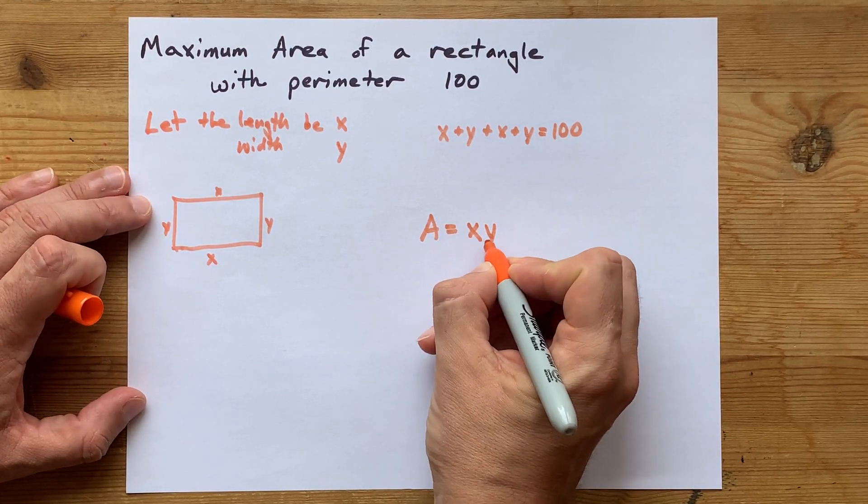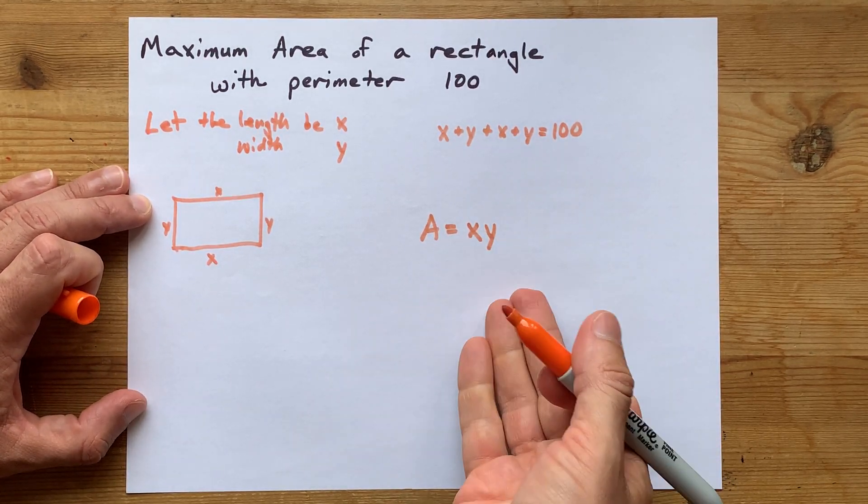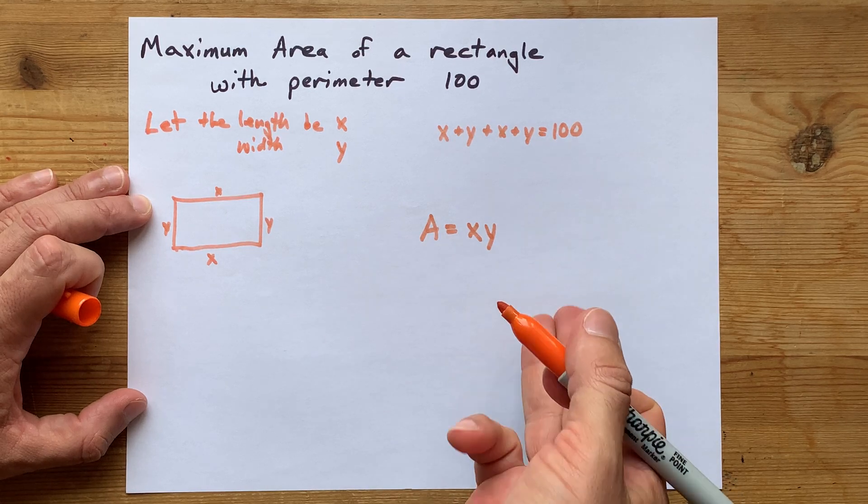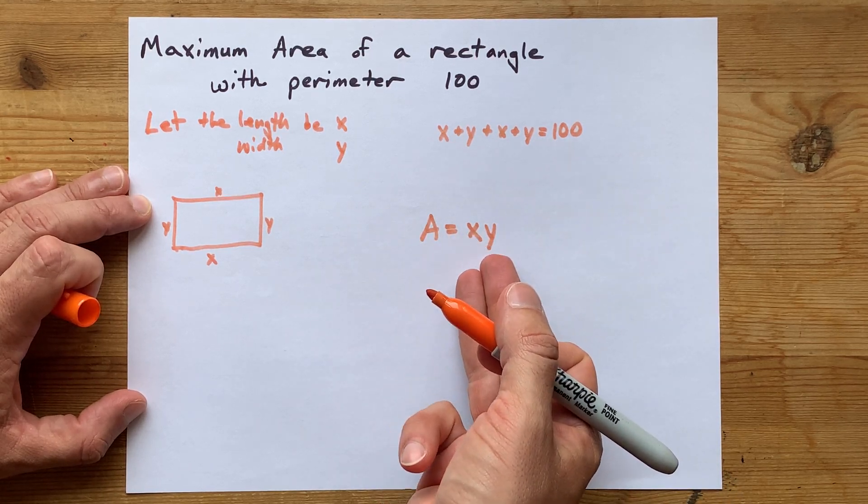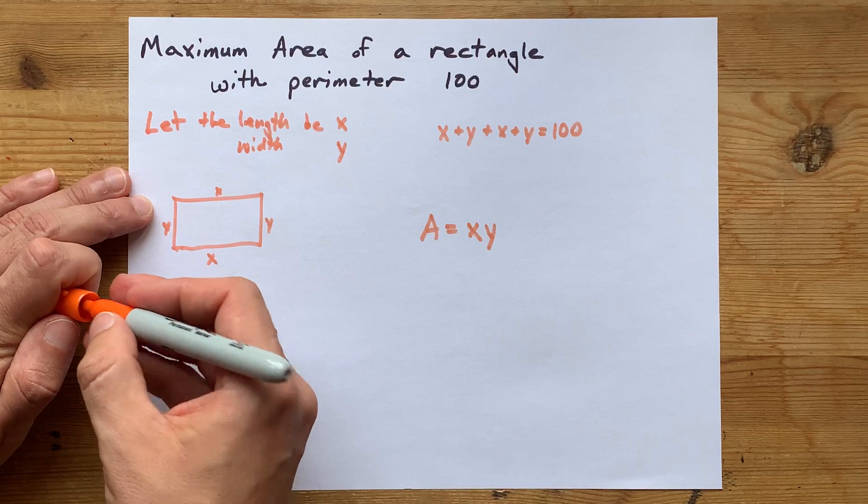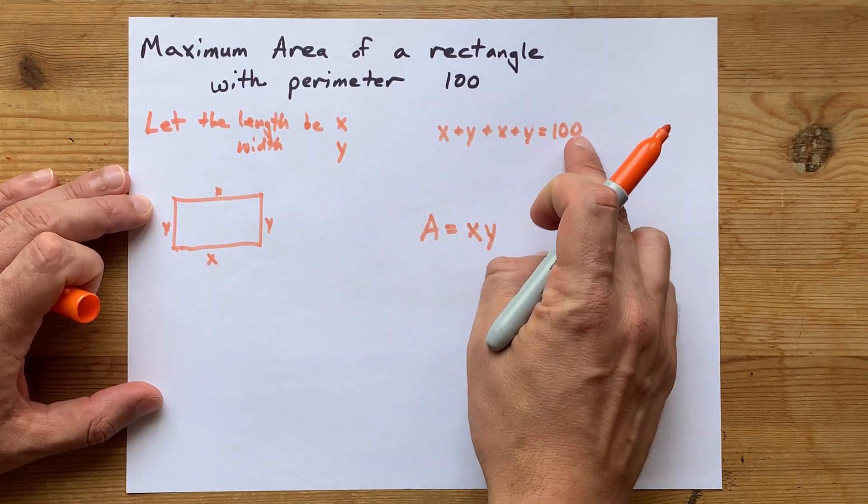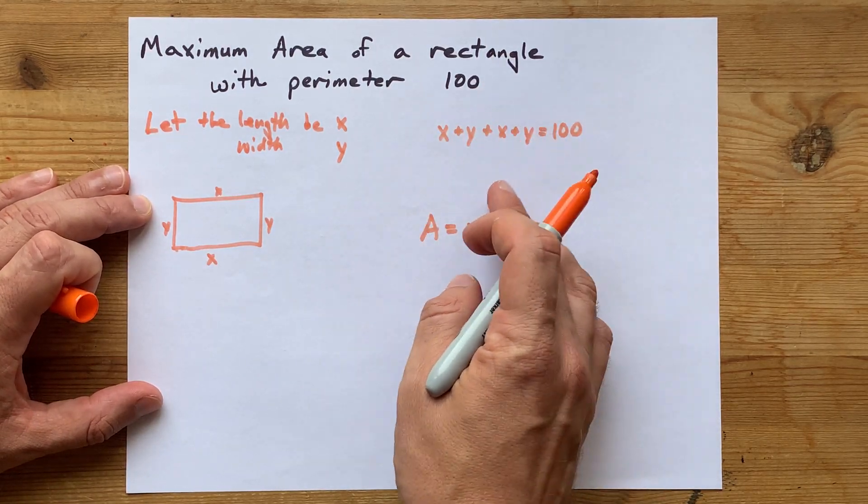But you can't solve for one of those until you know what one of them is in terms of the other. You're probably not used to seeing equations that have y in it. So what I want you to do is to go back up to your perimeter equation and solve for y.